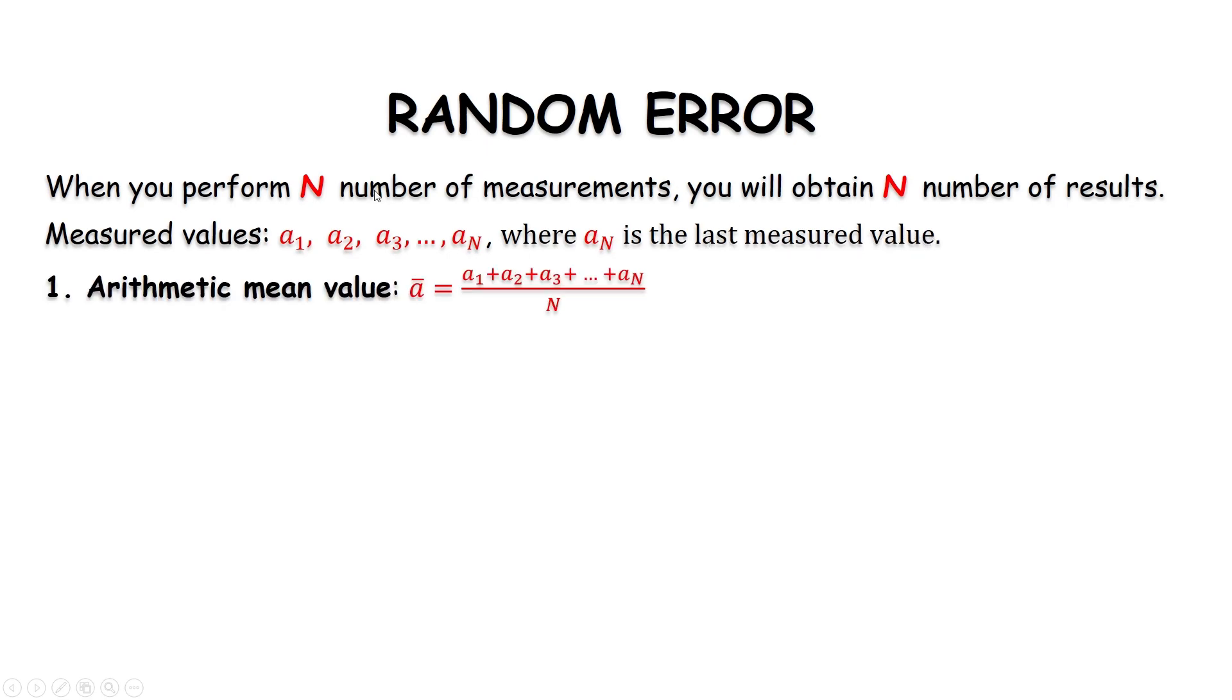First, what we should do is calculate arithmetic mean value. We simply sum all of our results and divide by the number of those results.